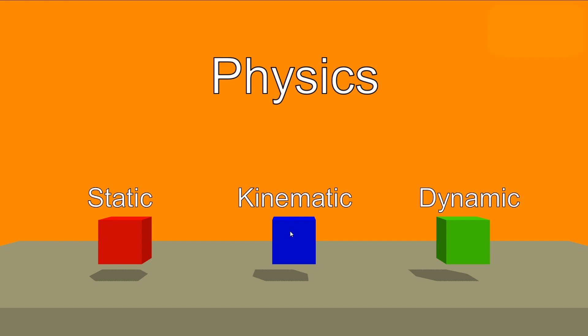Then we have kinematic. A kinematic object can be moved but kinematic object ignores all forces that act on it. And the most heavy one on calculation is dynamic. A dynamic object can be affected by all the forces around it and the mass of the dynamic object affects its behavior.